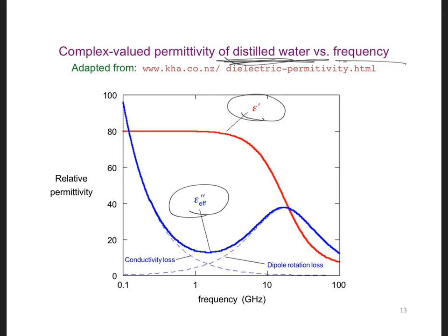So, for example, the imaginary part of the permittivity, at lower frequencies, it's dominated by conductivity loss. But that starts to diminish as you go to higher frequencies, where the dipole rotation loss starts to dominate the losses for distilled water.